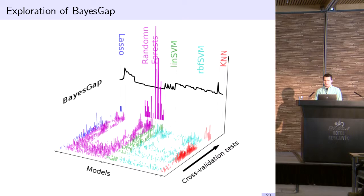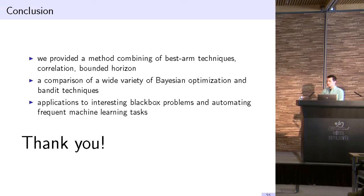Here are my conclusions, which I've already stated. We combine a number of different techniques from best arm techniques, use of correlation, and use of known bounded horizon. We compared to a variety of Bayesian optimization and bandit techniques and applied it to some interesting black box problems and automating frequent machine learning tasks. Thank you for your attention.